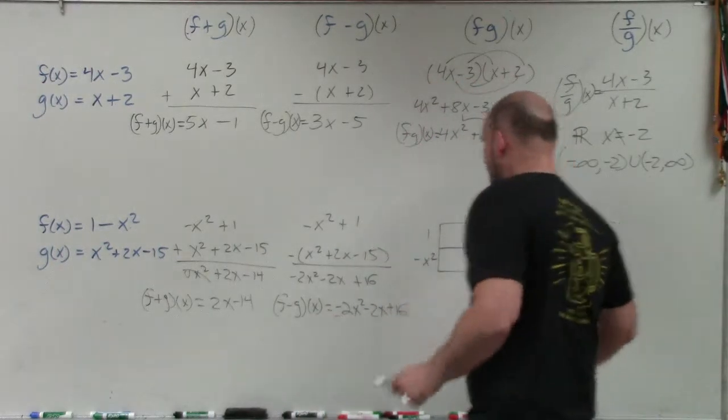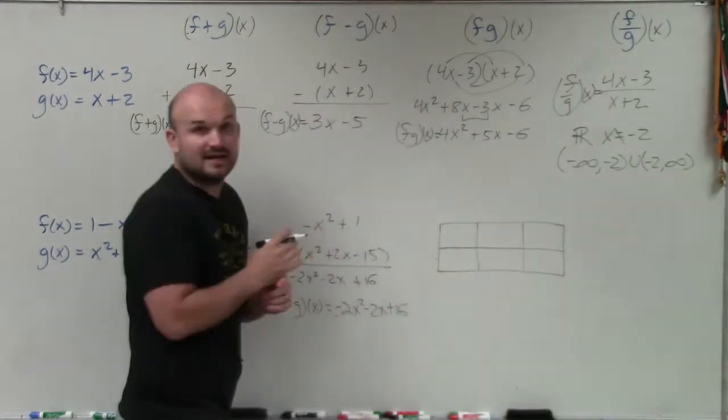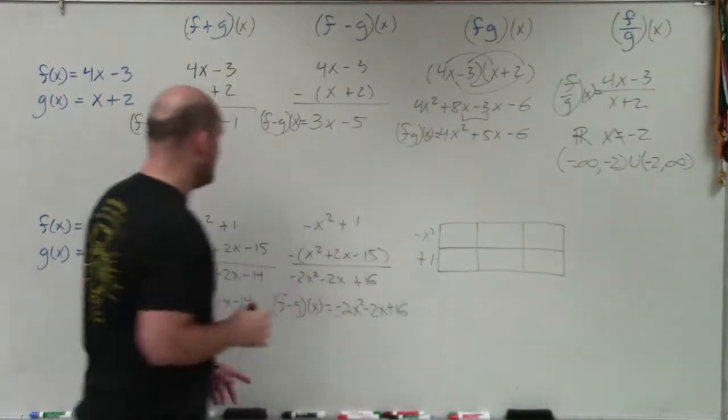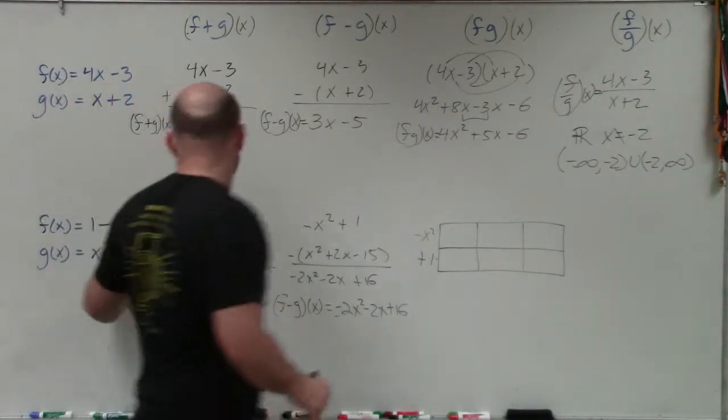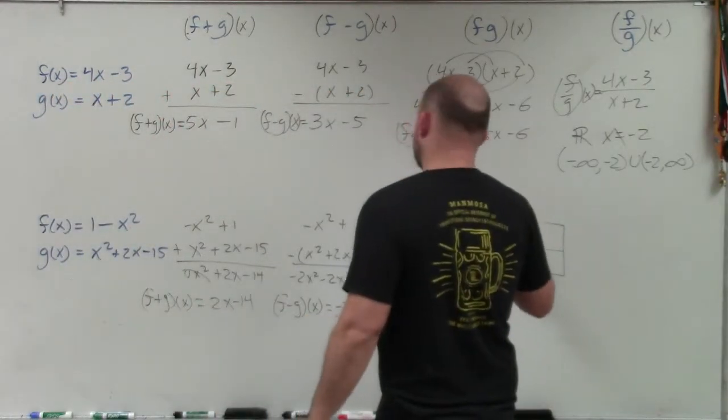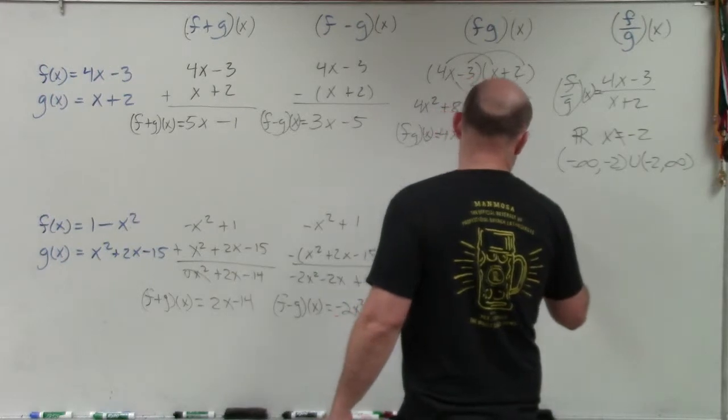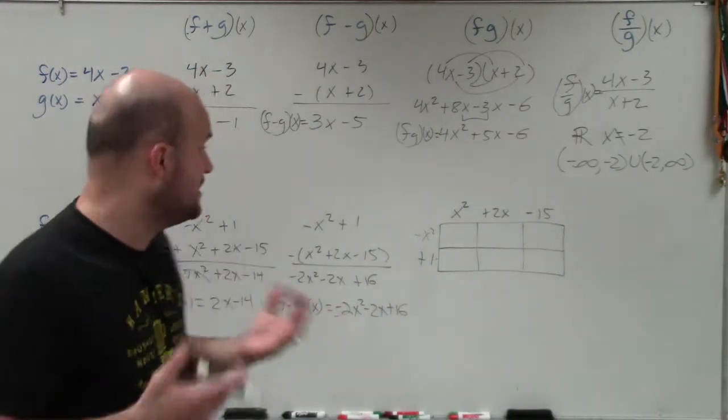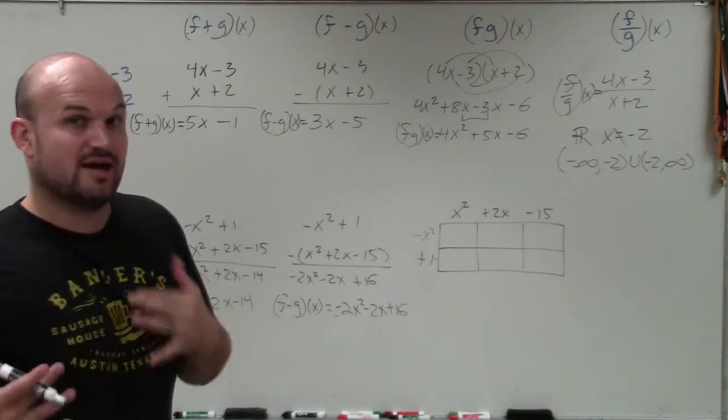So the first one I have here is 1 minus x squared. Actually, you know what? Let's rewrite this in standard form. Let's rewrite it as negative x squared plus 1. So negative x squared plus 1. And then I'll put what else? So I'm multiplying by, on the other side, x squared plus 2x minus 15. So now, ladies and gentlemen, all we're simply going to be doing is multiply to find the area of each little box. And then we'll combine all those to get our general area.